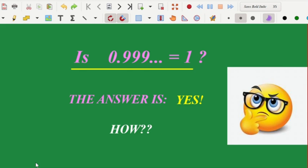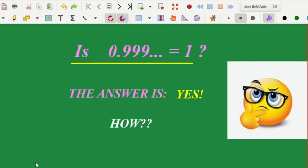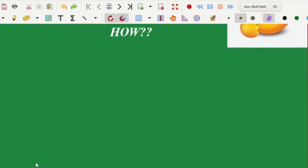For example, 0.1 can be alternatively written as 1 over 10. Similarly, 0.999 dot dot dot running up to infinity, this non-terminating repeating decimal, is indeed equal to 1. Let's check out the two simple proofs which justify the same.